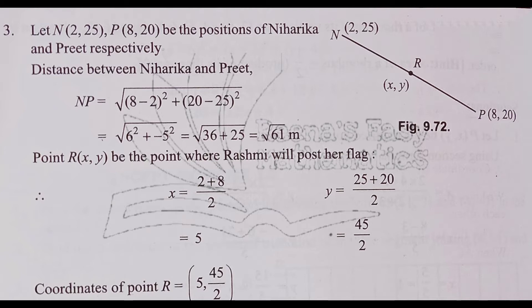Now we apply the distance formula to find the distance between Niharika and Preet. Distance = √[(x2-x1)² + (y2-y1)²] = √[(8-2)² + (20-25)²] = √[36 + 25] = √61 meters. So the distance between the two flags is √61 meters. For the second part, Rashmi has to post a blue flag exactly halfway between the line segment joining the two flags.